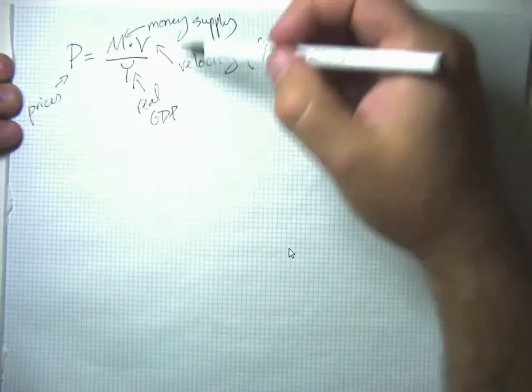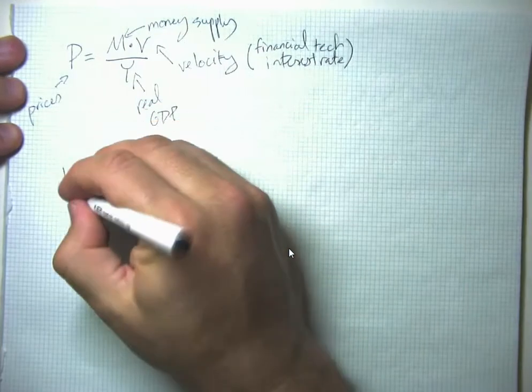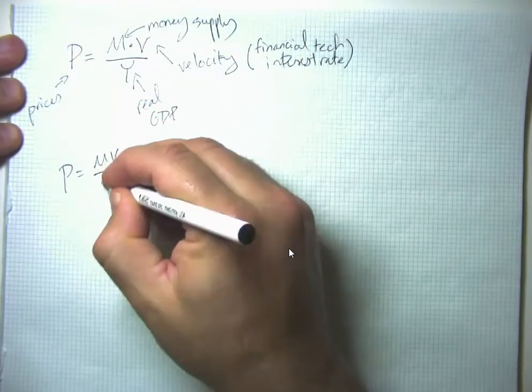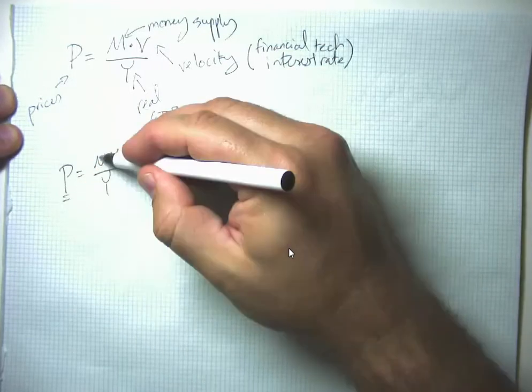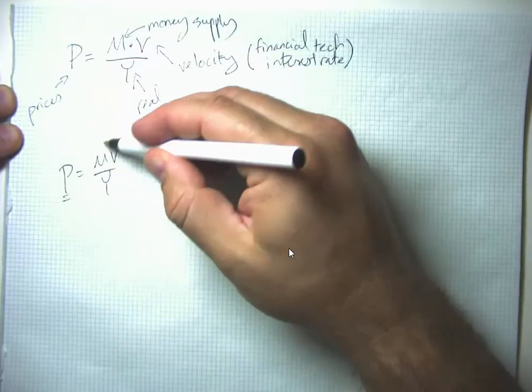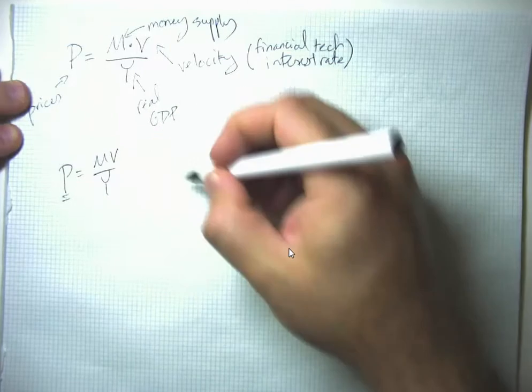If you look at this, I'm going to rewrite it so it's less cluttered, you can see that the prediction is the price level depends upon the ratio of these things.